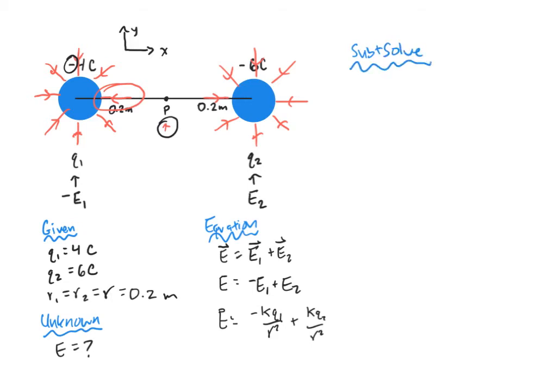So let's go ahead and rewrite our equation for the electric field, but I'm going to go ahead and factor out my K over R squared. So what I'll get is that E is equal to K over R squared times negative Q1 plus Q2, or E is equal to 9 times 10 to the ninth over 0.2 squared times negative 4 plus 6.